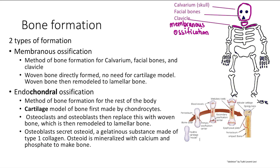In contrast, the other method is endochondral ossification. This is the method of bone formation for the rest of the body — everything in white here is endochondral ossification. Here you have a cartilage model of bone first made by the chondrocytes. That's hence why it's called endochondral ossification — endochondral ossification needs that cartilage model. Then osteoclastin and osteoblasts will replace this with woven bone, which you can see starting to replace it here.